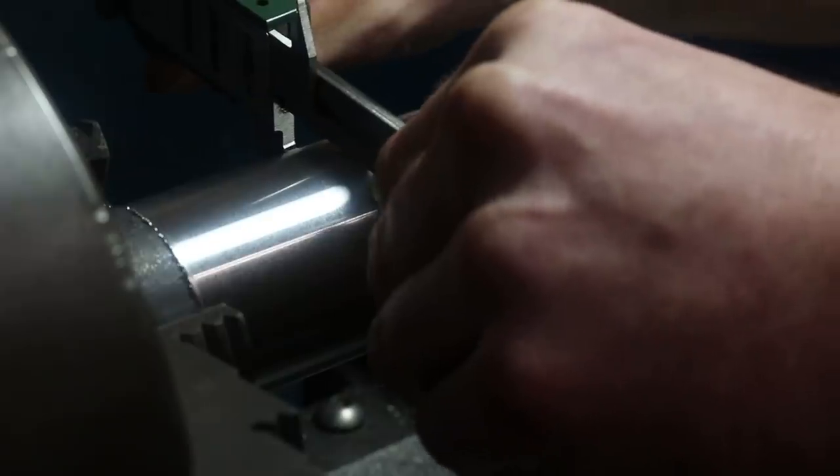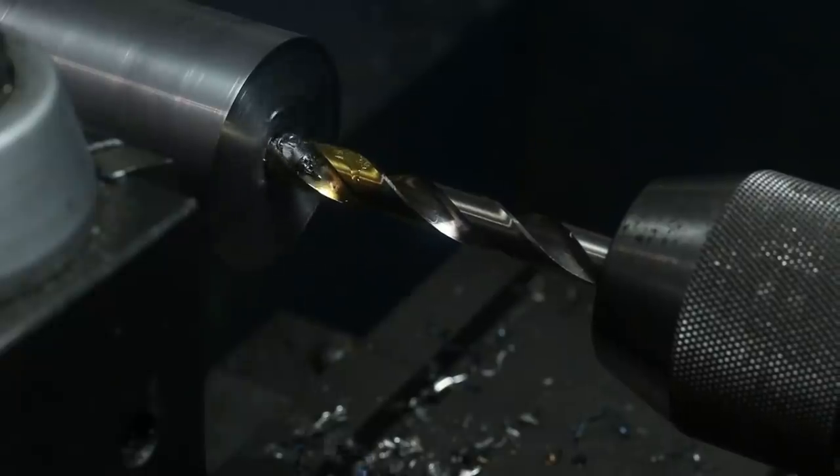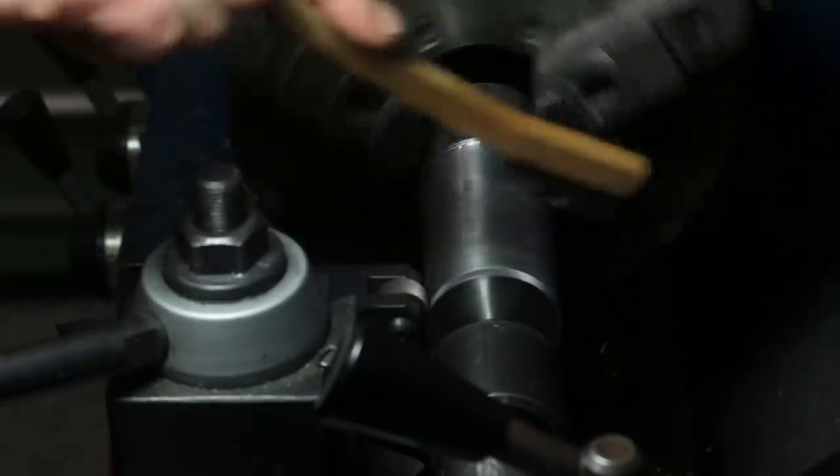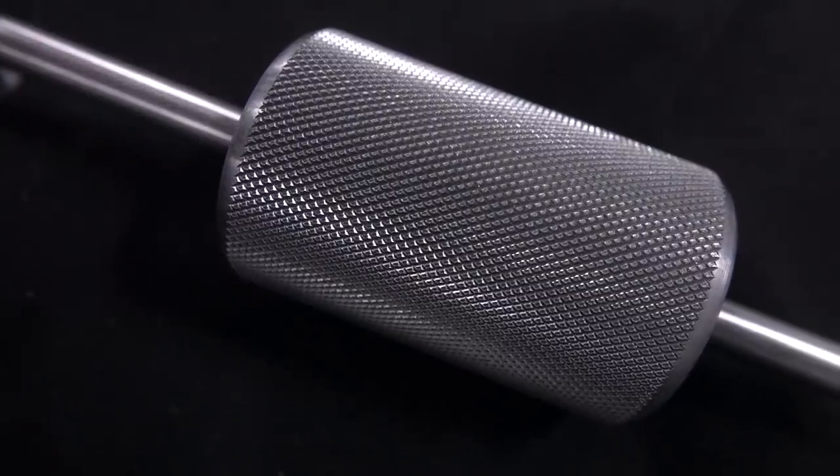Turning the OD of the counterweight, doing this on the manual Emco lathe, drilling, and then I thought Jared did a great job knurling this part. The knurling looked great and that's not always an easy thing to do.